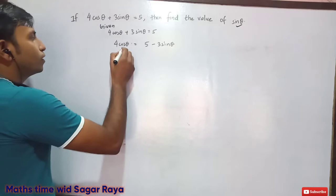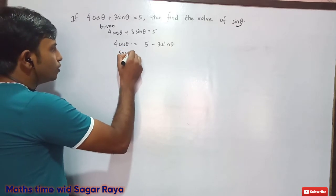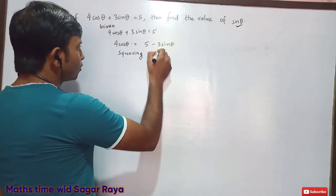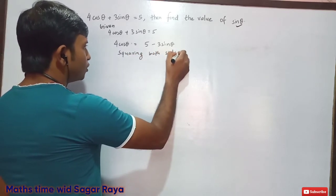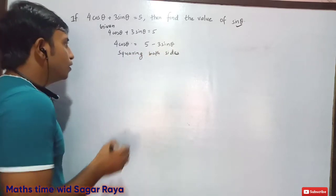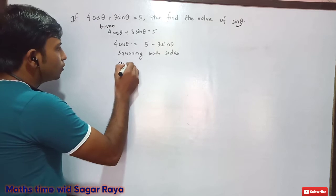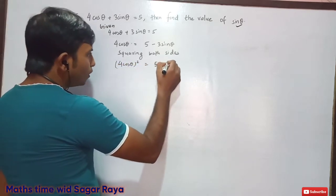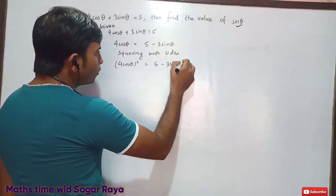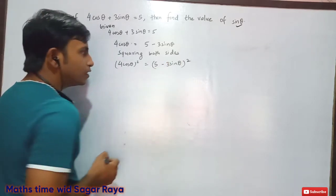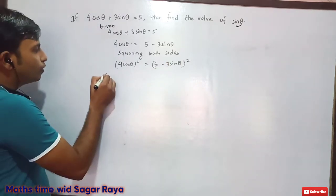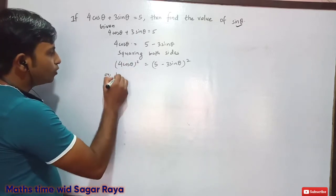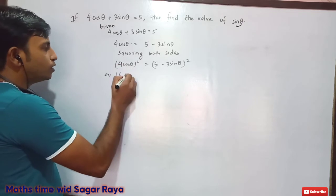Now I am going to square both sides. Squaring both sides: (4 cos θ)² on the left equals (5 − 3 sin θ)² on the right. The square of 4 cos θ gives 16 cos²θ on the left hand side.